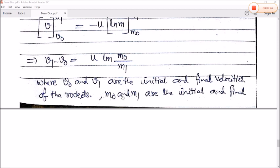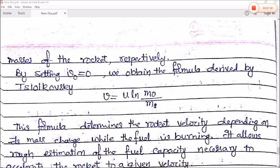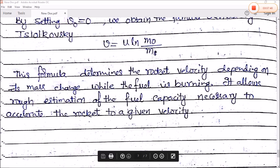If we put V0 equal to zero, we obtain the formula V = u*ln(M0/M1). This formula determines the rocket velocity depending on its mass change while the fuel is burning. It allows rough estimation of the fuel capacity necessary to accelerate the rocket to a given velocity. So this is the rocket propulsion or rocket motion equation.